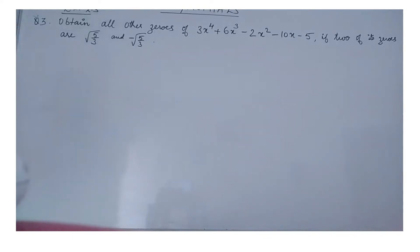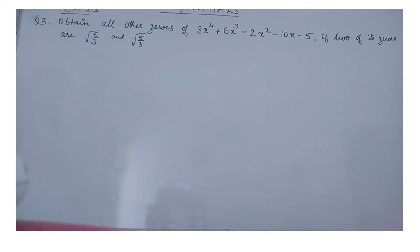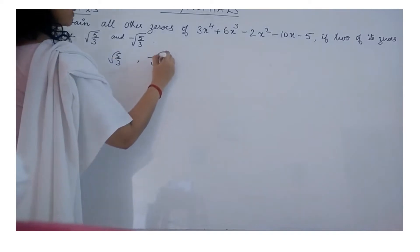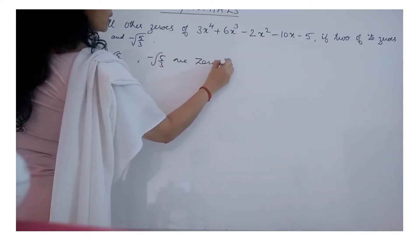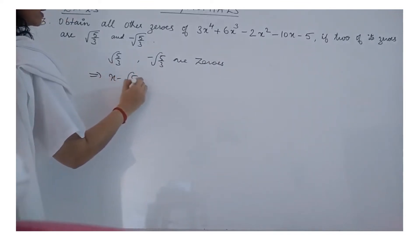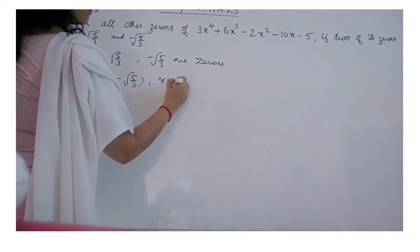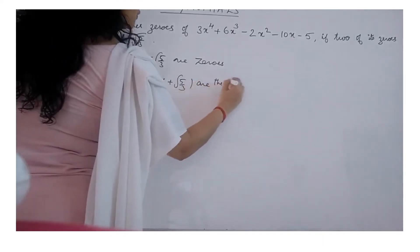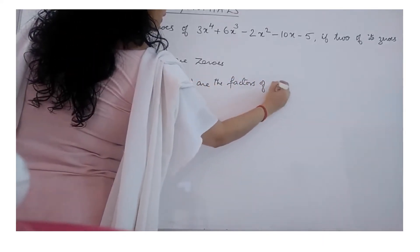Next, we will consider the third problem. Obtain all other zeros of 3x⁴ + 6x³ - 2x² - 10x - 5, if two of its zeros are √(5/3) and -√(5/3). Since √(5/3) and -√(5/3) are the zeros of the polynomial, we can say that (x - √(5/3)) and (x + √(5/3)) are the factors of the given polynomial.